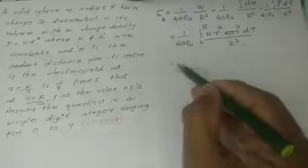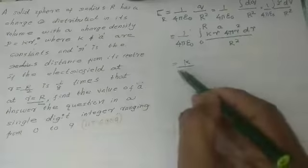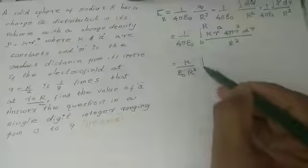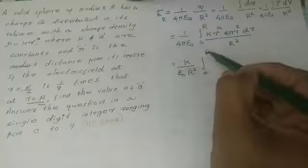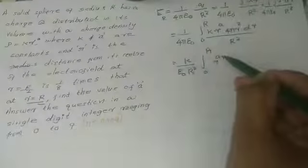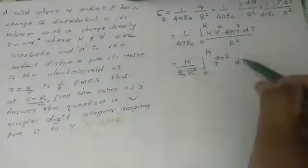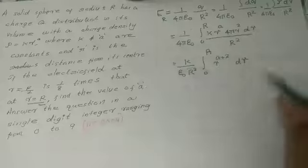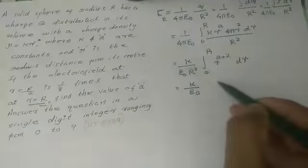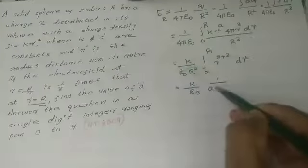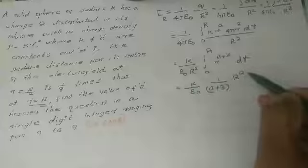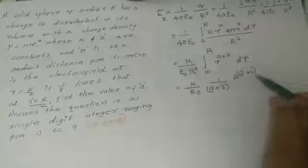That is k divided by epsilon 0 1 over r squared integral within the limit 0 to capital R of r to the power a plus 2 dr, which equals k by epsilon 0 1 divided by a plus 3 r to the power a plus 1.